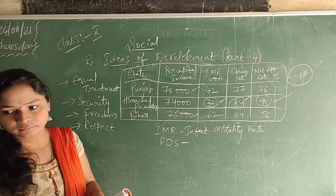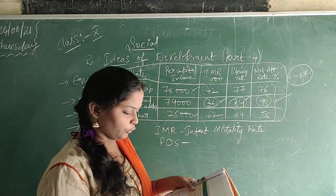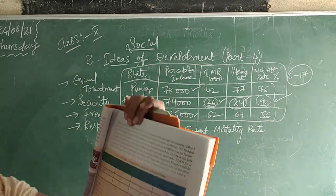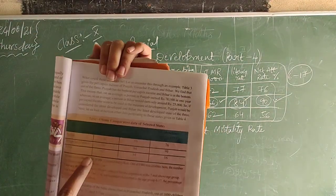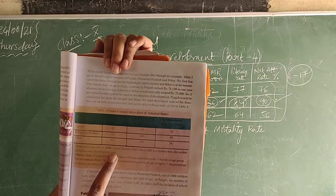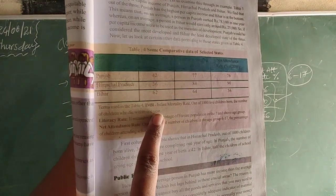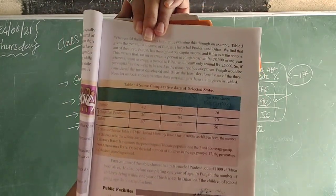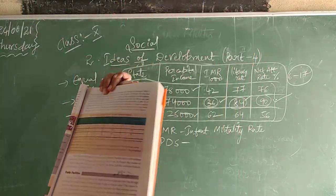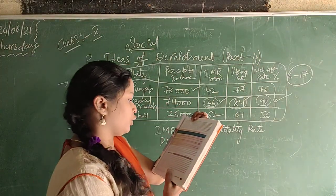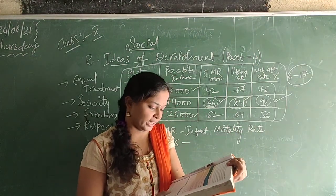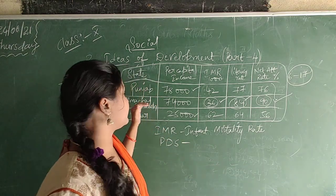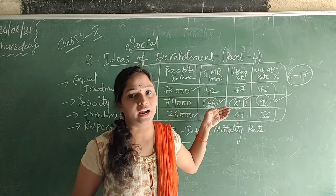In this table, the first column gives you the infant mortality rate, the second column gives the literacy rate, and the third column gives the net attendance rate. Out of 1,000 children born alive, 36 died before completing one year of age — that is for Himachal Pradesh.